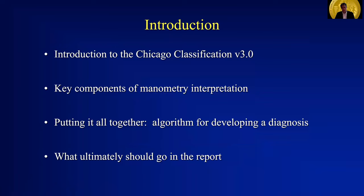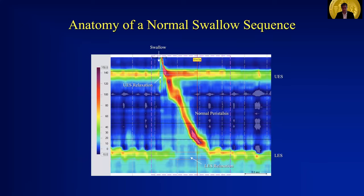What I'm going to be talking about today will first be to introduce you to the Chicago Classification version 3.0, which is the standard for manometry interpretation around the world right now — the key components of how we do this manometry interpretation, the key metrics that we put all together and develop an algorithm for coming up with a final diagnosis, then ultimately what elements to include in the final report.